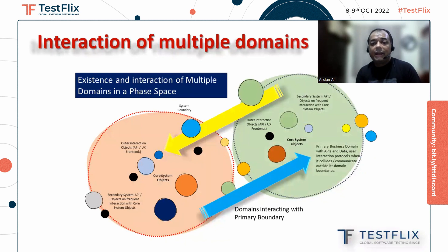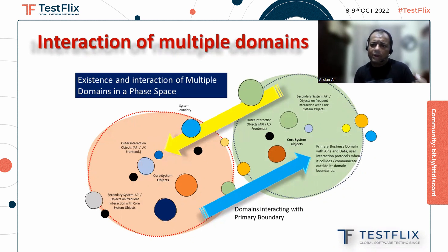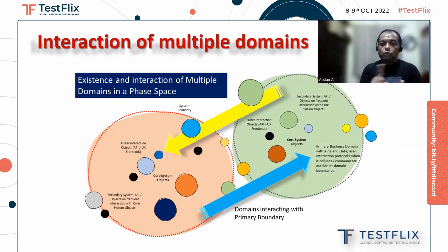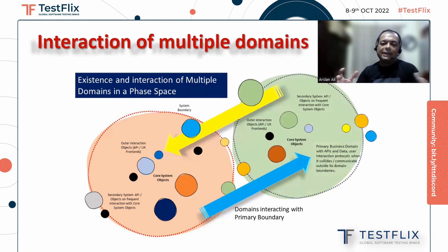Then comes the interaction of multiple domains. One phase space domain can interact with another phase space domain. For example, if you are going to purchase a Netflix account, Netflix does a one-dollar transaction on your credit card. That is Netflix going out of its boundary to another boundary — the banking boundary — and affecting that system boundary. Those two systems are now related, which is very common these days in e-commerce and fintech applications. This is another part of my theory that proves that two different domains occurring in different phases can interact with each other.